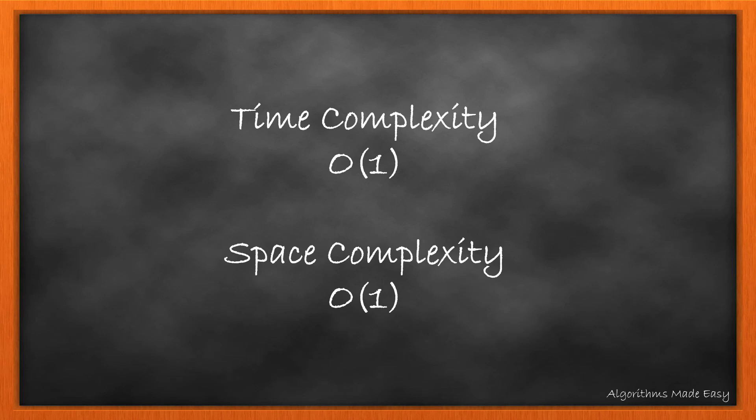The time complexity is O(1) because we know that the value cannot be greater than 1690. So we will calculate all the ugly numbers till that and just return the value at that index. Space complexity is O(1) because we have the constant array of size 1690.